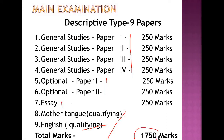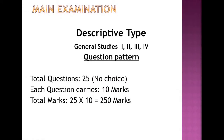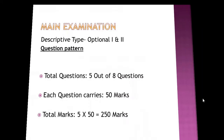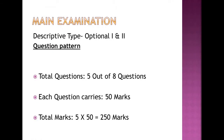The total written score in the Main Examination is 1750 marks. In the General Studies papers 1 through 4, each paper has 25 questions with no choice, and each question carries 10 marks for a total of 250 marks per paper. For the optional papers, there are 8 questions given and you need to write 5; each question carries 50 marks for a total of 250 marks per paper.